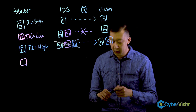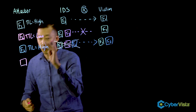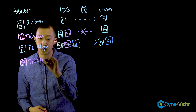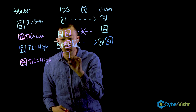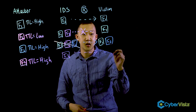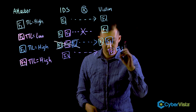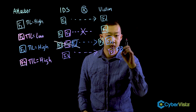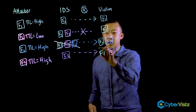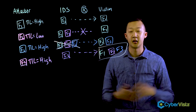The victim still has fragment one and three, but the hacker will actually resend fragment two with a high TTL value. The IDS will now see fragment two along with fragment one, which means the trifecta is complete — the victim has now been attacked.